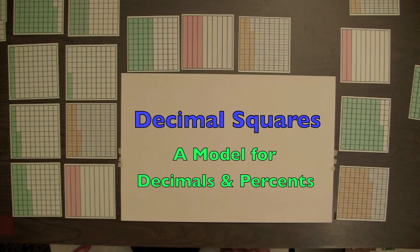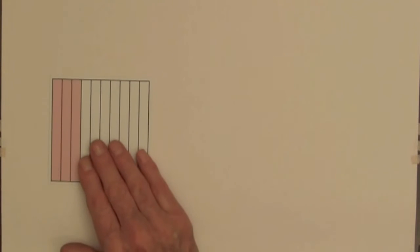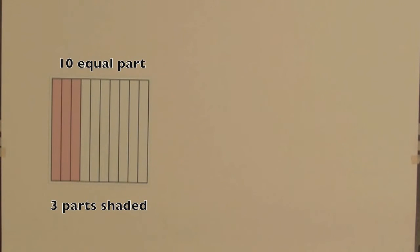Here is a model for decimals and percents. Each square with red shading has 10 equal parts. So we can describe the square by saying 3 parts are shaded, the square has 10 equal parts, or 3 parts out of 10 are shaded.